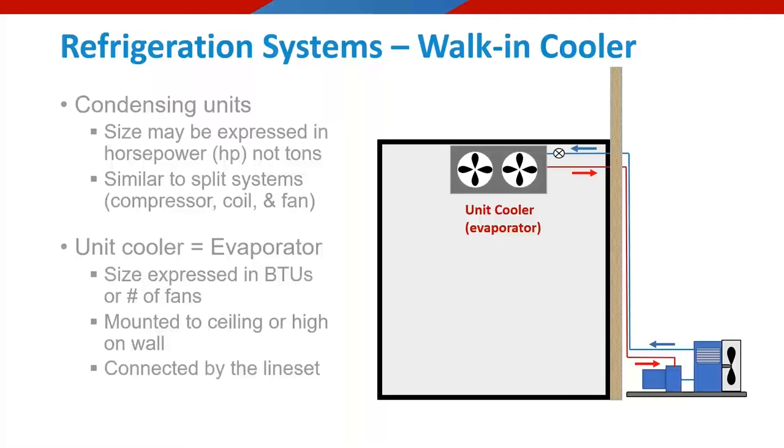The inside and outside units are connected by the line set. Again, this is the same as a line set in a traditional system. And here we see all the major components labeled and the refrigerant flow is being shown for you. It might help to see some of these units in claim photos.